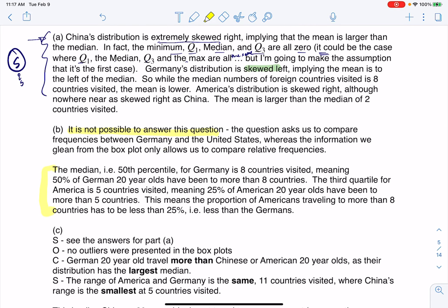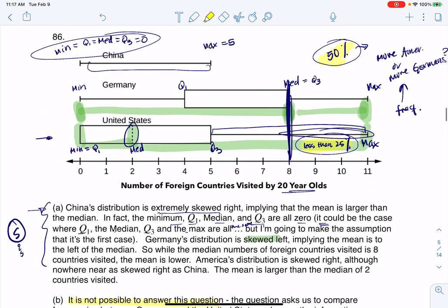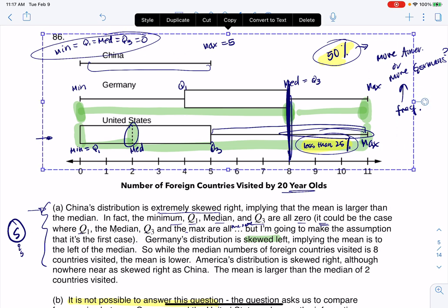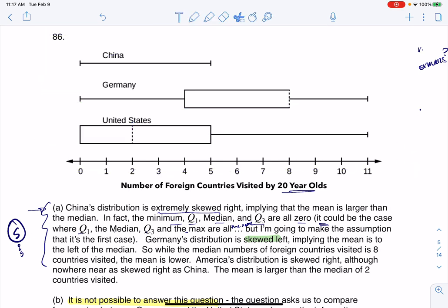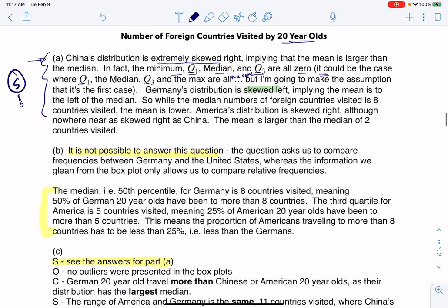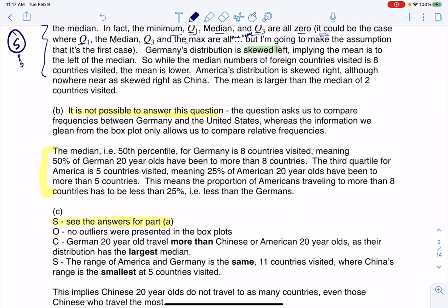And then it says compare the three box plots. So for SOCS, you had the answer in Part A. No outliers were present. I'm going to assume, and let me clear this out just so we can see some stuff a little bit more clearly. I'm going to assume if outliers were present, they would have been shown. So since there's no isolated dots, I'm going to assume that there are no outliers, which is fine. I just want to take note of that. So that's why I say no outliers were presented in the box plots. And then German 20-year-olds traveled more than Chinese or American 20-year-olds as their distribution has the largest median.